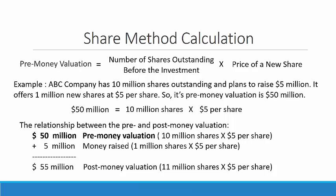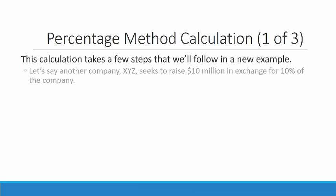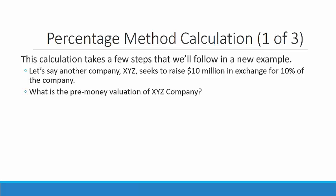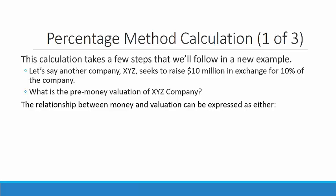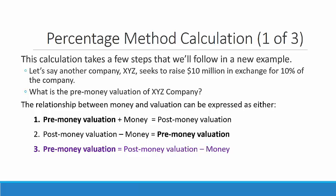Here's the relationship between the pre- and post-money valuation: $50 million is the pre-money valuation, $5 million is the money raised, and $55 million is the post-money valuation. The percentage method calculation takes a few steps. Let's say another company, XYZ, seeks to raise $10 million in exchange for 10% of the company. What is the pre-money valuation of XYZ? The relationship can be expressed as: pre-money valuation plus the money equals post-money valuation, or equivalently, post-money valuation minus the money equals pre-money valuation.